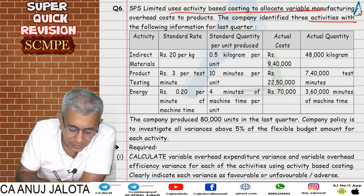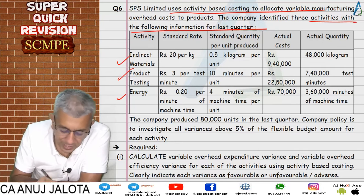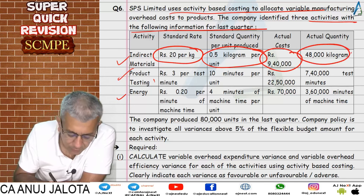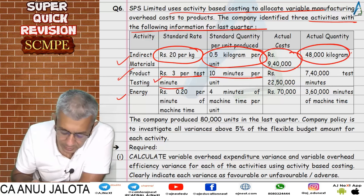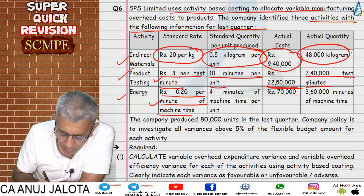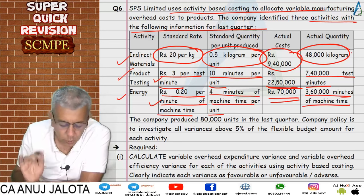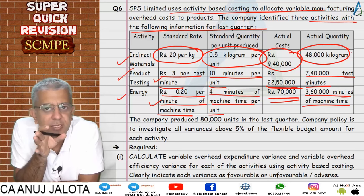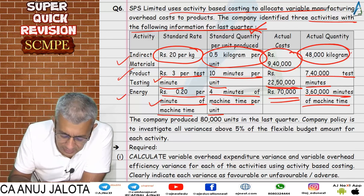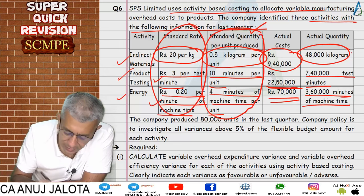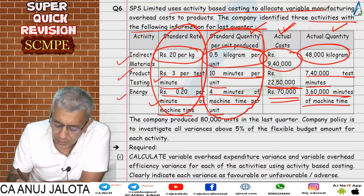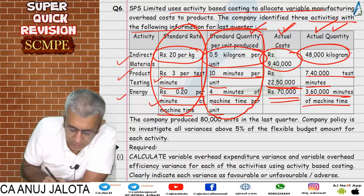In question six, SPS uses activity based costing to allocate variable manufacturing overhead. Three activities are identified: indirect material — standard rate 20 per kg, standard quantity 0.5 kg per unit produced; product testing — 3 per testing minute, 10 minutes per unit; energy cost — 0.2 per minute of machine time, 4 minutes per unit. Actual costs and actual quantities are given. Divide actual cost by actual quantity to get actual rates.